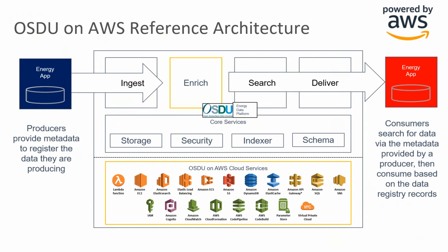Security is job zero at AWS. OSDU on AWS is inherently secure — data is encrypted in transit and at rest, and authentication has been designed to integrate with your IDP. Reliability: OSDU on AWS has been built on core AWS managed services including, as shown in the diagram, Amazon API Gateway, Amazon S3, Amazon DynamoDB, and Amazon ECS, and others. These services are designed to scale horizontally and recover automatically, providing industry-leading availability and durability by leveraging multi-region and multi-AZ capability, providing superior reliability.